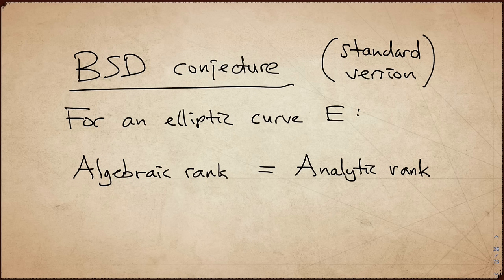And now, the statement of the BSD conjecture finally makes sense. For any elliptic curve e, the algebraic rank equals the analytic rank. And this is mind-bending, because the L function and the analytic rank is constructed only from finite number systems. And I mean counting solutions mod p. While the algebraic rank comes from infinite number systems. In our case, the rational numbers. These two ranks belong in different worlds.